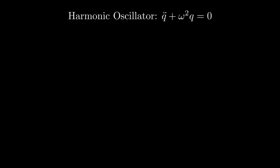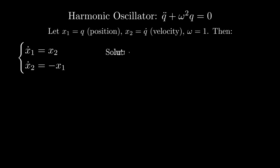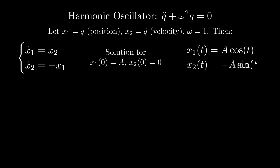A differentiable function x that maps an interval of time from t0, representing the initial time, to tf, representing the final time, to ℝⁿ is a solution if it satisfies the differential equation for all times in the interval [t0, tf]. We look at a simple example: the harmonic oscillator, a system described by a differential equation of the second order. This can be written as a system of first order ODEs by defining x1 as the position and x2 as the velocity, with the angular frequency equal to 1 for simplicity, resulting in ẋ1 = x2 and ẋ2 = -x1.